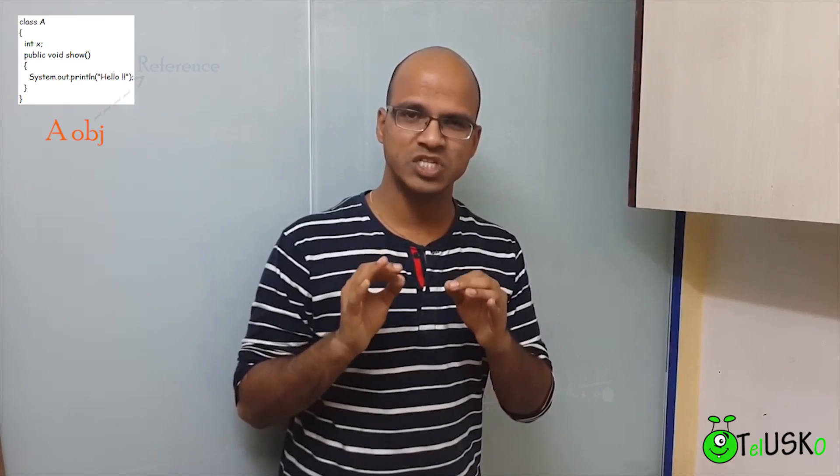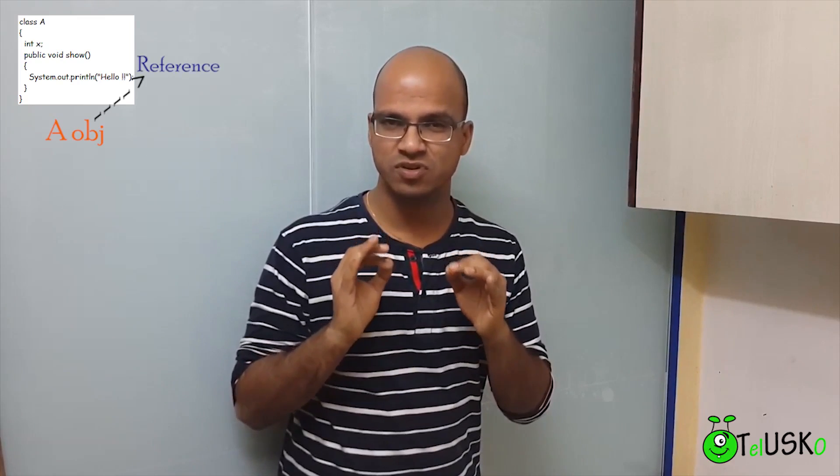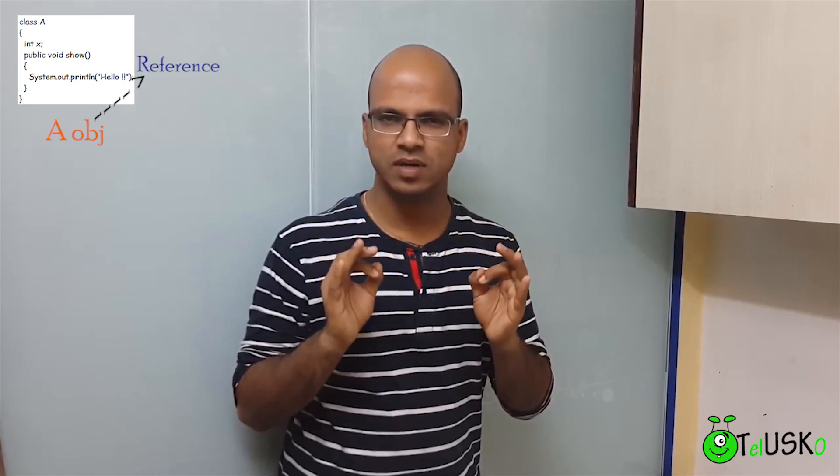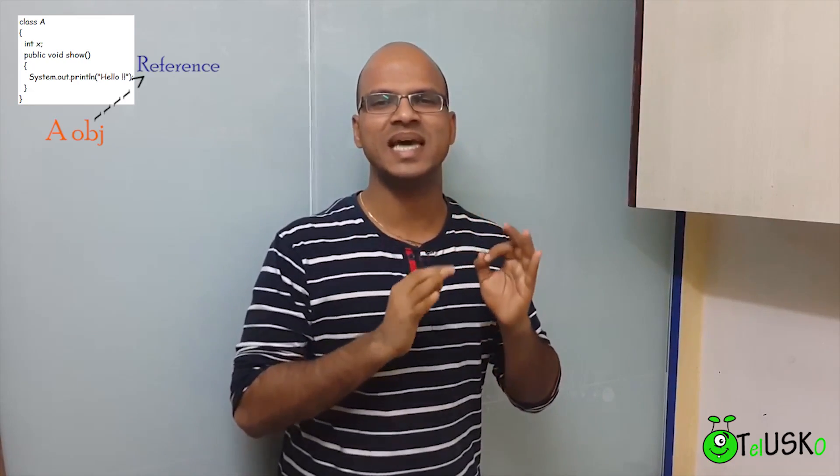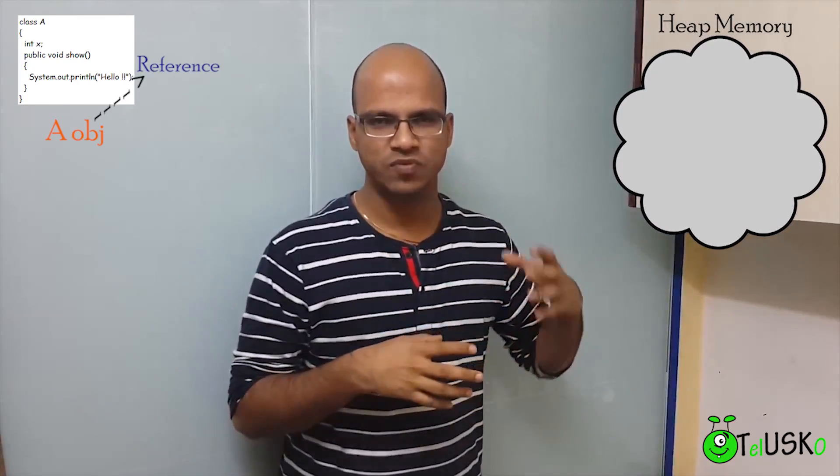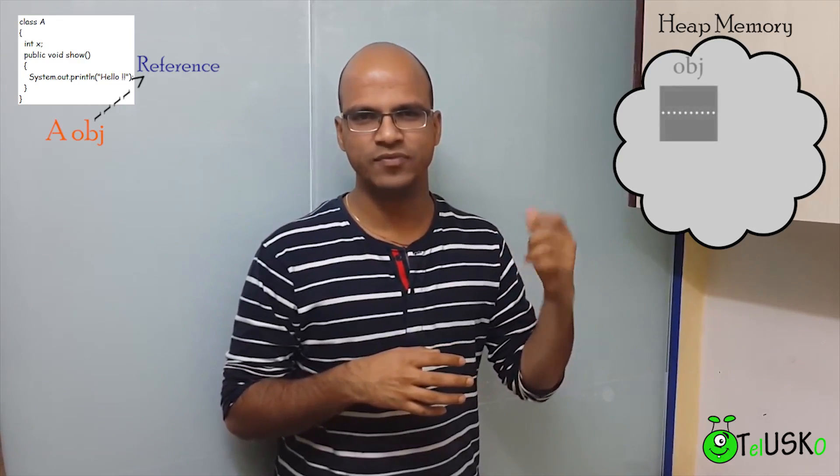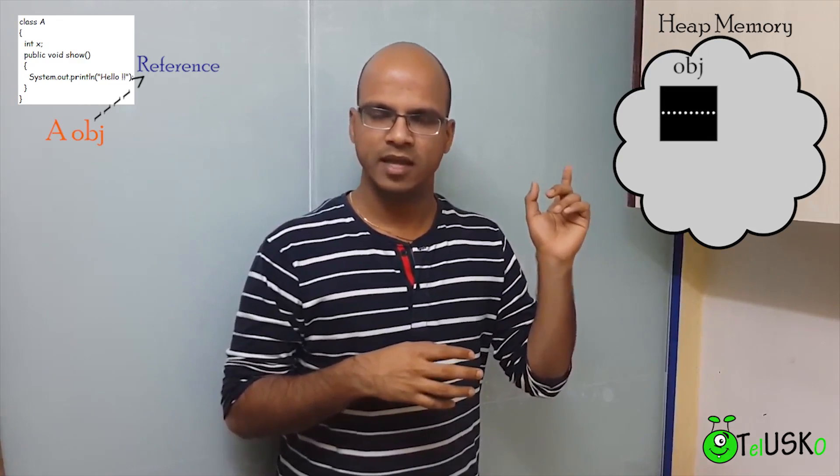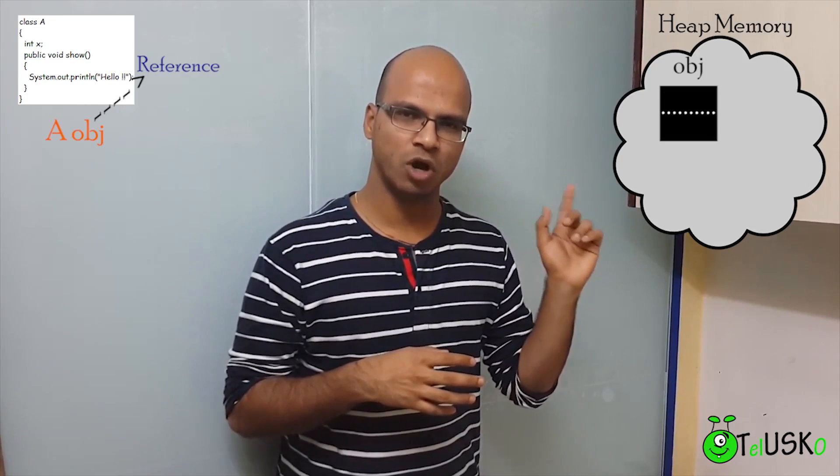Now if you're familiar with C++, that's how you create an object. So we write A obj. But in Java, that obj is not an object, it's a reference. Because in Java, you create objects inside heap memory. So we have a heap memory here. In this heap memory, you have to create an object. Now question is, how to create that object?